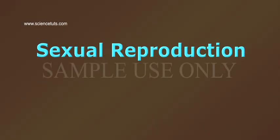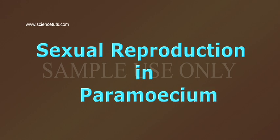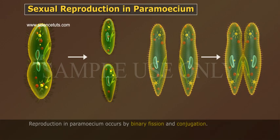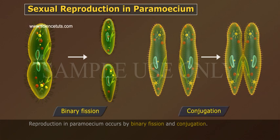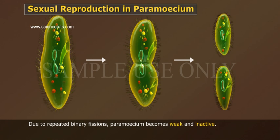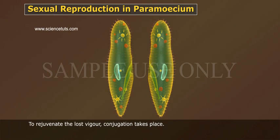Sexual reproduction in Paramecium occurs by binary fission and conjugation. Due to repeated binary fissions, Paramecium become weak and inactive. To rejuvenate the lost vigour, conjugation takes place.